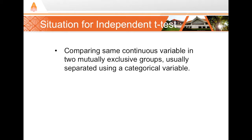Generally, an independent two-sample t-test is for situations in which you're comparing the same variable measured in two different groups. Because we're grouping samples into two different groups, there's usually some categorical variable to do that. For example, we might be measuring blood pressure like in the last example, but now we have a second variable — sex — that separates the participants into two groups: male and female.